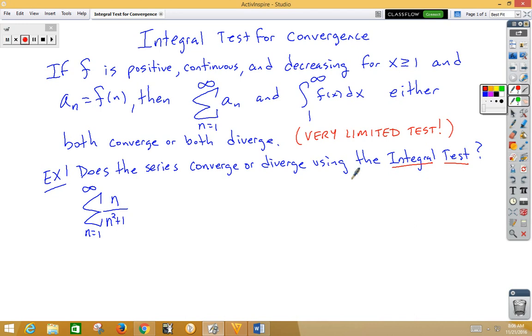So let's go ahead and take a look first at is every term positive? Well, if we start plugging in n is 1, n is 2, n is 3, and we look at it, there's no way to make a negative term. So yes, every term is positive.